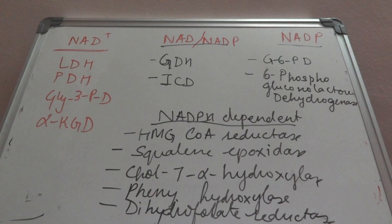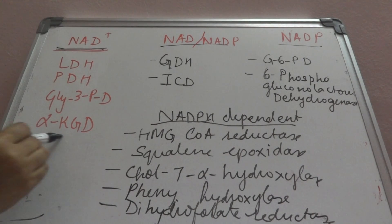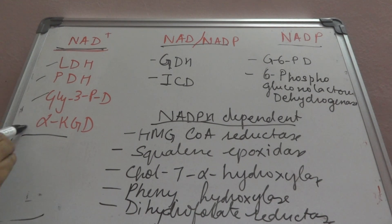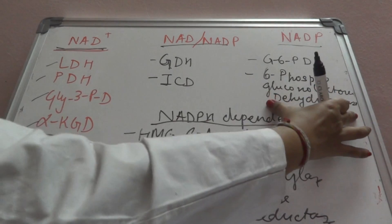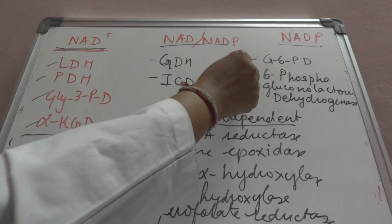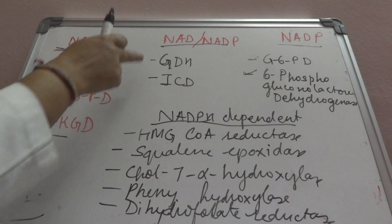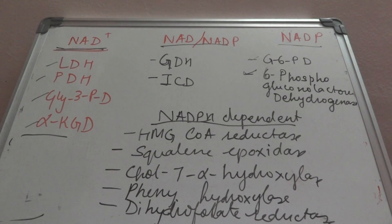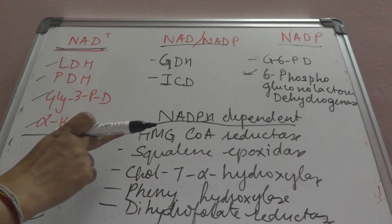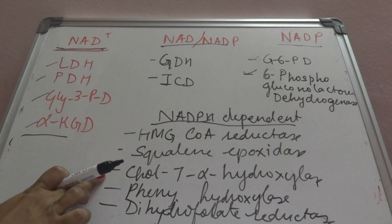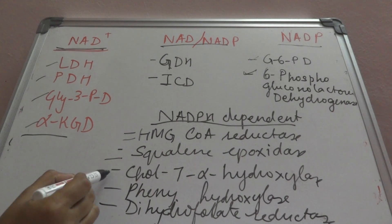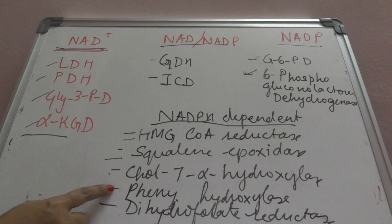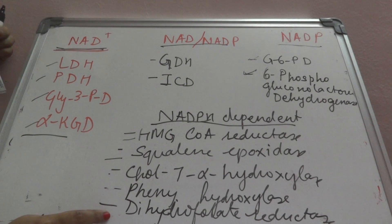To make it simple: NAD+ dependent reactions are mostly in carbohydrate metabolism — lactate dehydrogenase, pyruvate dehydrogenase, glyceraldehyde-3-phosphate dehydrogenase, alpha-ketoglutarate dehydrogenase — except reactions in the hexose monophosphate shunt which uses NADP+, i.e., glucose-6-phosphate dehydrogenase and 6-phosphogluconate dehydrogenase. The two enzymes that can use both NAD and NADP are glutamate dehydrogenase and isocitrate dehydrogenase.